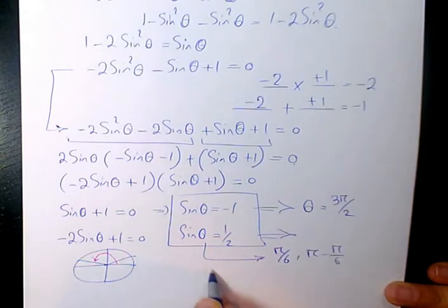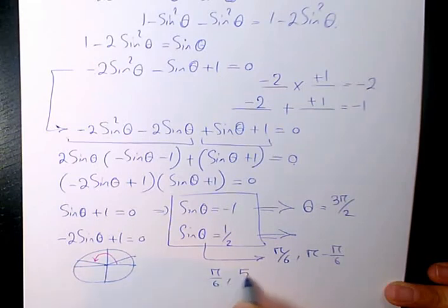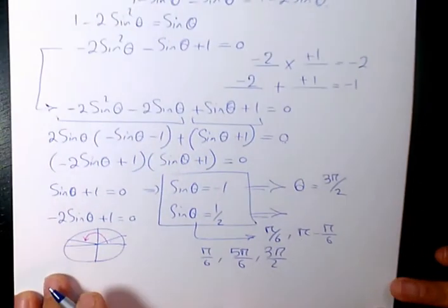And in quadrant 2 it's going to be pi minus pi over 6, which is going to be 5 pi over 6. And we had already 3 pi over 2. These are going to be the three answers to this question.